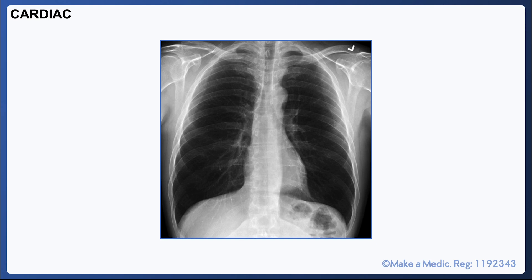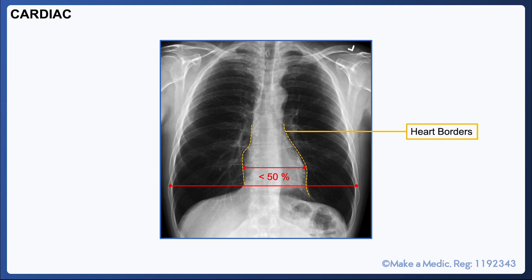Assessing the cardiac status begins with estimating the cardiothoracic ratio. The width of the heart should be less than 50% of the width of the thorax, and an increased cardiothoracic ratio is typically seen in patients with heart failure. Then having a look at the heart borders — generally speaking, the right heart border is in contact with the right middle lobe and the left heart border is in contact with the lingula. Therefore, any obscuring of these heart borders may correspond with pathology in each of these anatomical structures.